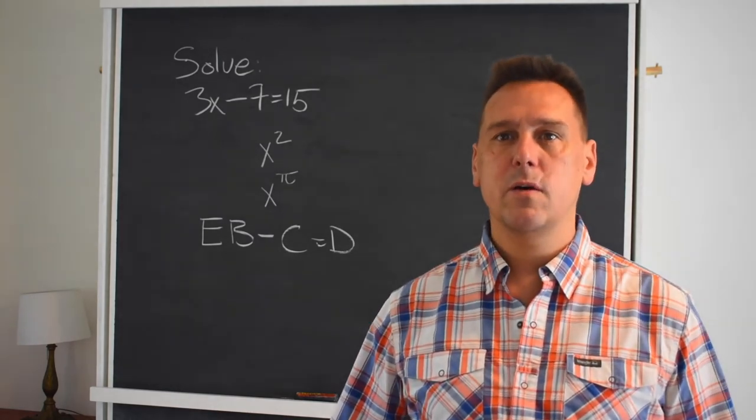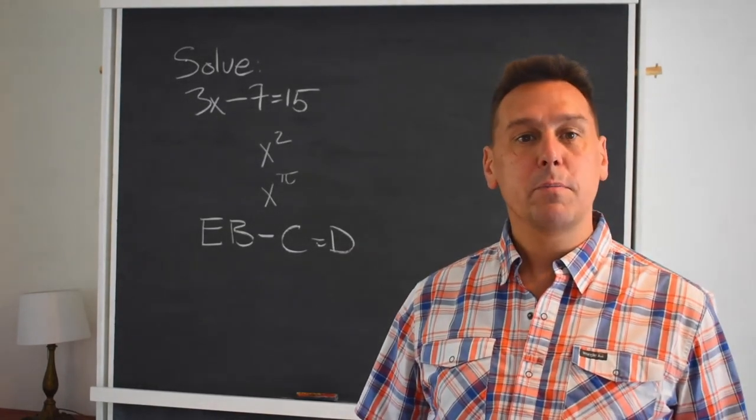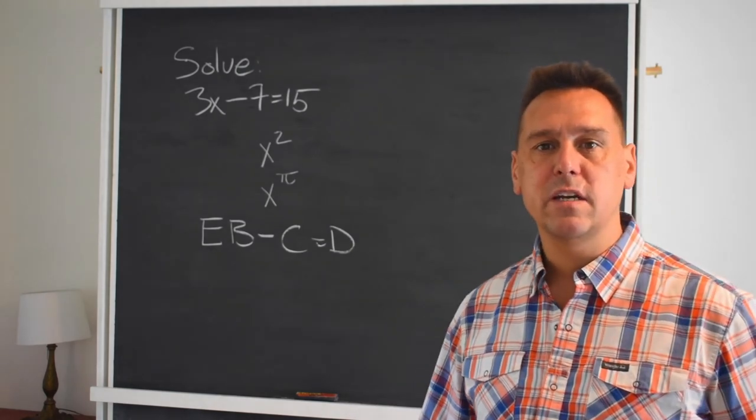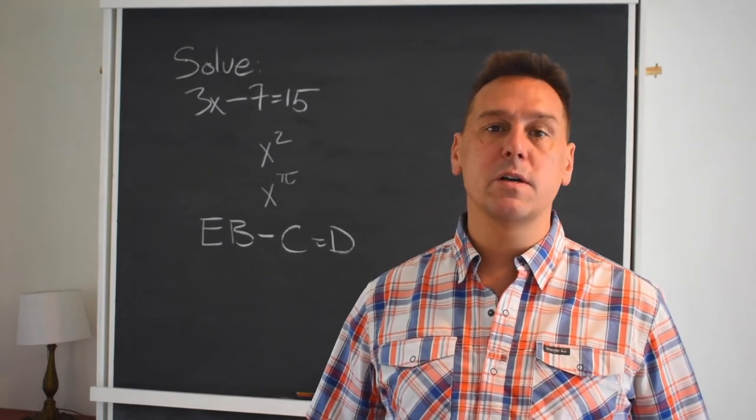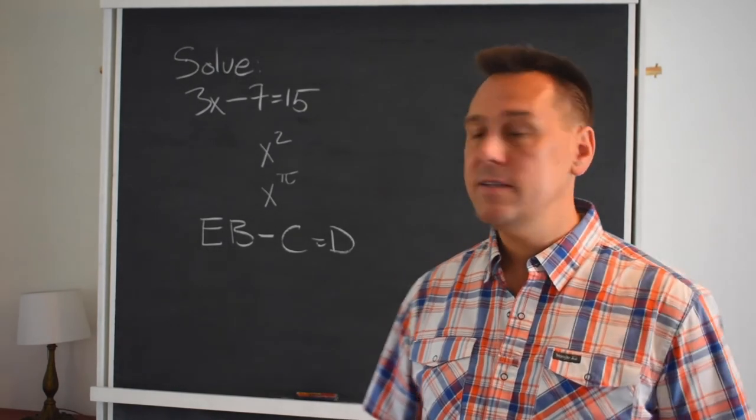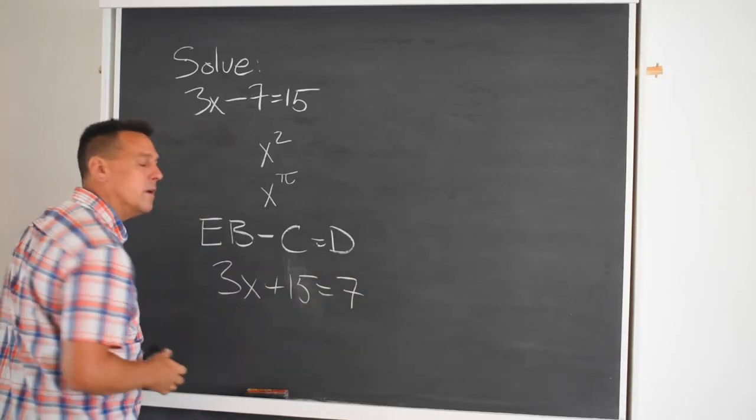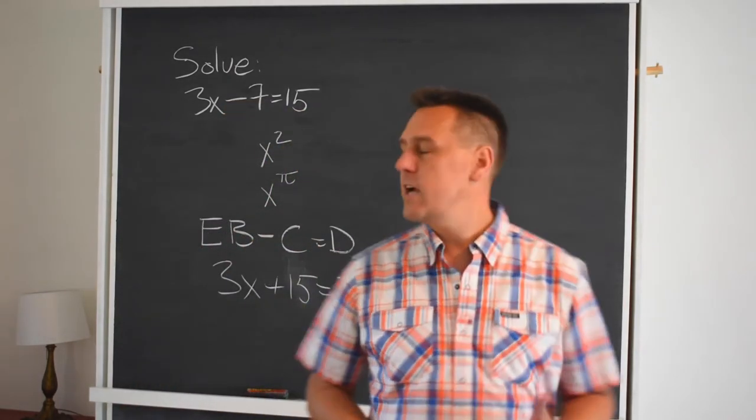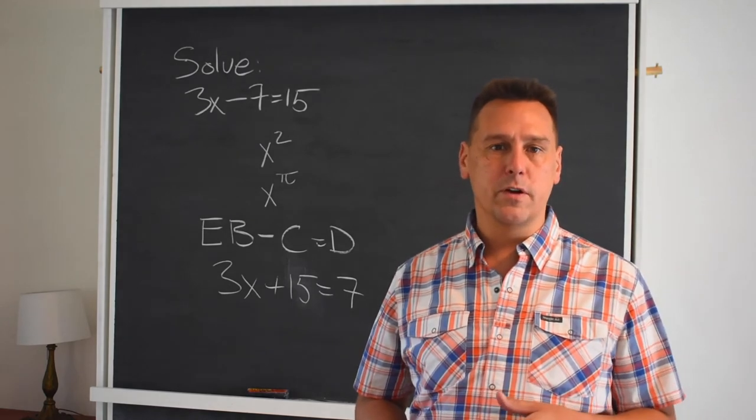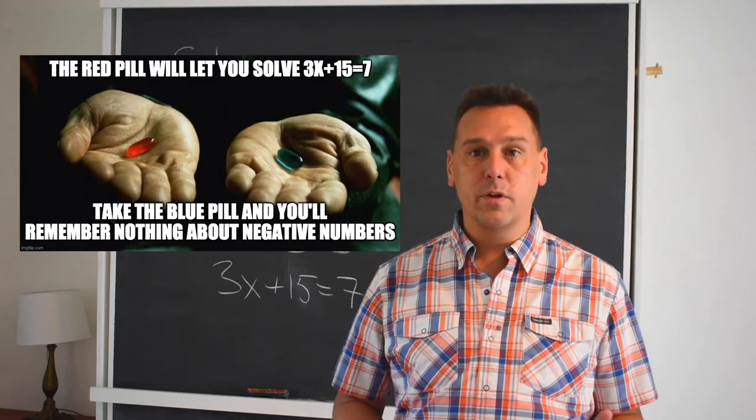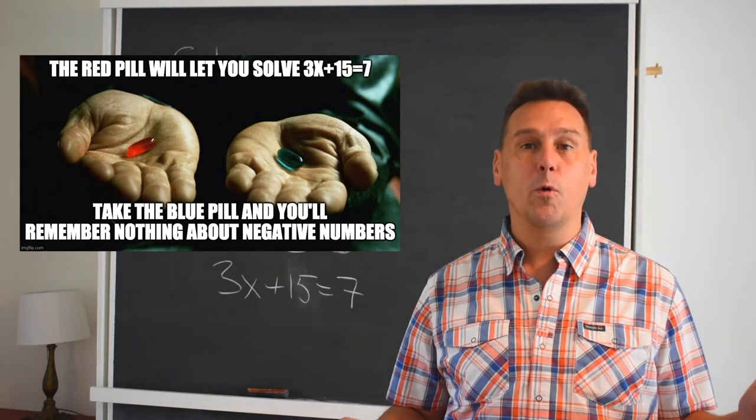The problem that we started with doesn't require negative numbers for a solution. Properly translated, 3x minus 7 equals 15 would have made some kind of sense to any mathematical scribe throughout much of history and across many cultures. But the similar to our eyes, 3x plus 15 equals 7. In order to solve this, it would require us to subtract 15 from both sides. But that would mean subtracting a bigger number from a smaller number. Something that was considered total nonsense and impossible for most of the history of what we call Western mathematics.